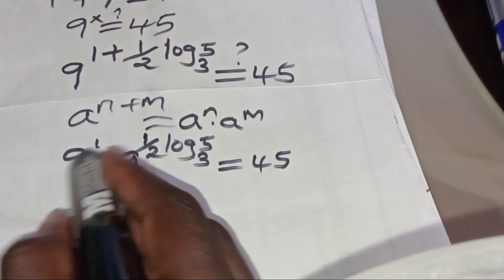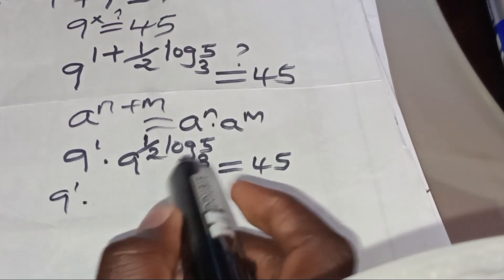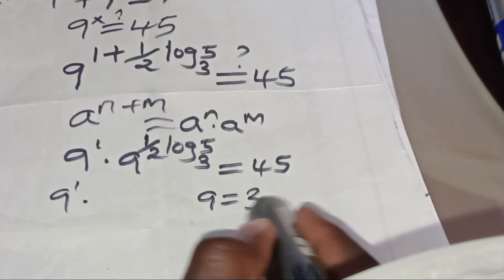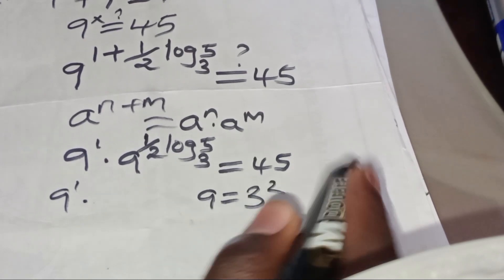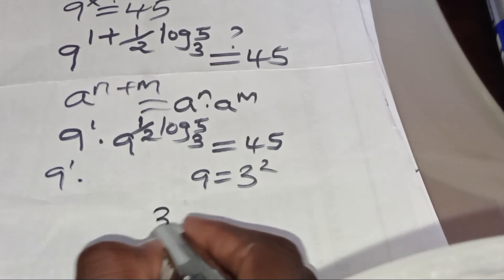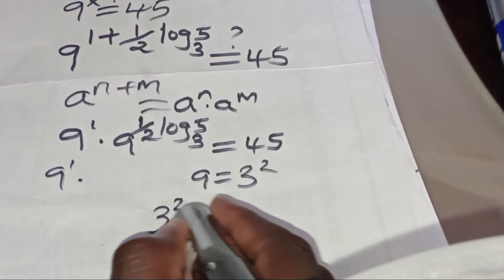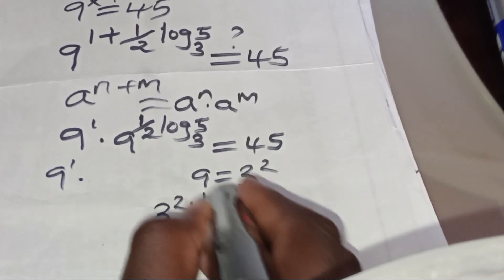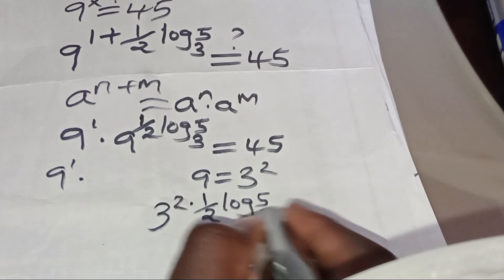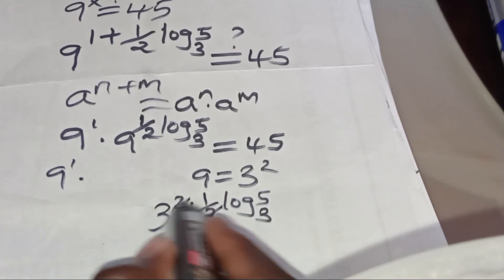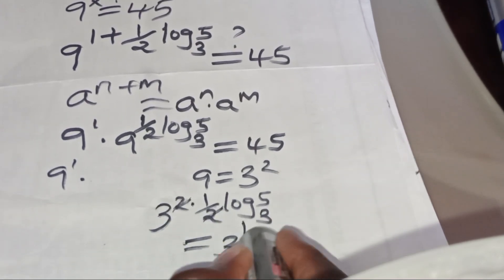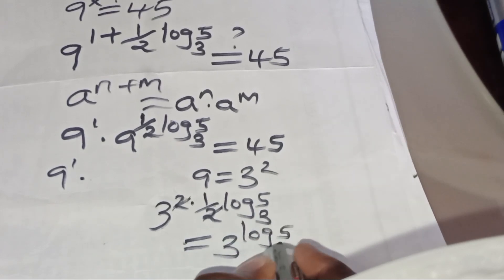From what we have, this is 9 to the power of 1 multiplied by — we can express 9 as 3 to the power of 2 — so this means it is the same as 3 to the power of 2 multiplied by one-half log₃5. Simplifying the exponent, we have 3 to the power of log₃5.